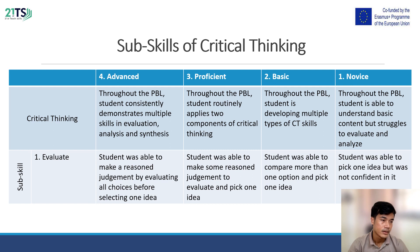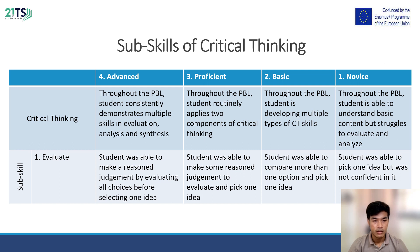Sub-skill one: Evaluate. At the advanced level, students are able to make a reasoned judgment by evaluating all choices before selecting one idea. At the proficiency level, students are able to make some reasoned judgment to evaluate and pick one idea. At the basic level, students are able to compare more than one option and pick one idea. At the novice level, students are able to pick one idea but are not confident in it.